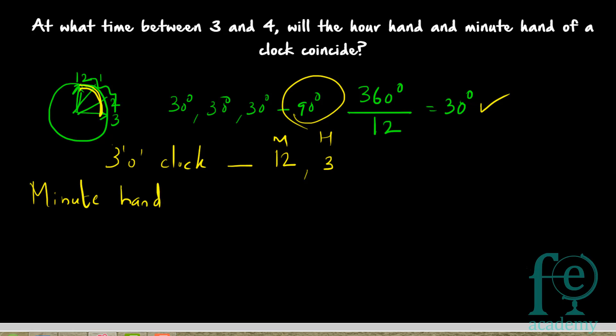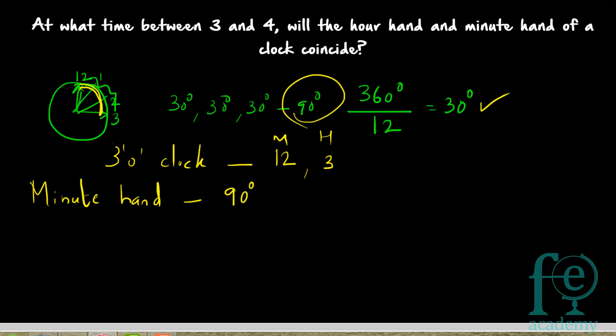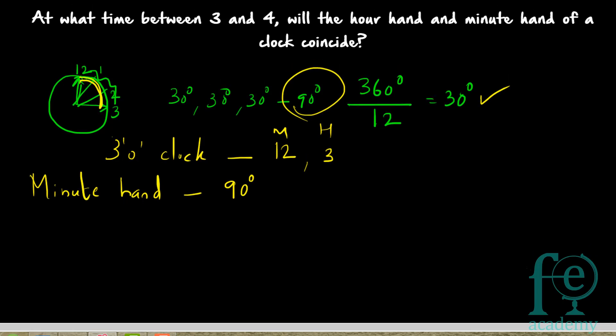Now, when the minute hand is travelling, the hour hand is not remaining constant — the hour hand is also moving. Even though their speeds are different, both the hour hand and the minute hand are moving. So you have to find out the relative speed, and this will be the same for every question — the relative speed between the hour hand and the minute hand is constant.